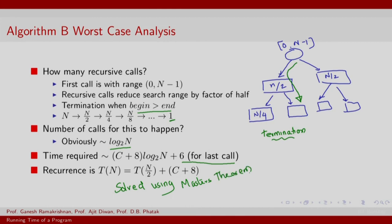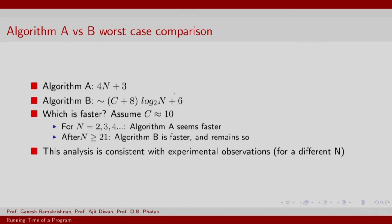So how do these two algorithms compare? We will assume that algorithm B, the solution to the recurrence relation, is exactly what we found by analyzing the decision tree, and that happens to be C plus 8 log to the base 2 of n plus 6. So this is the worst case for binary search. The linear search has a worst case of 4n plus 2. Which of these is faster?